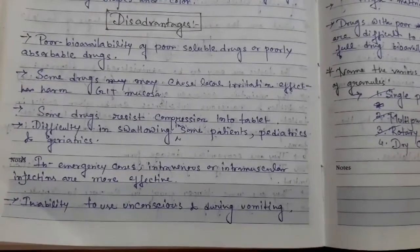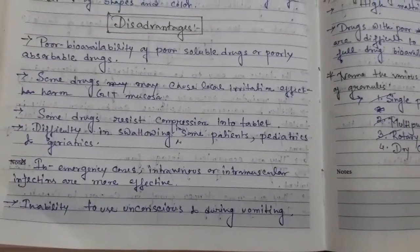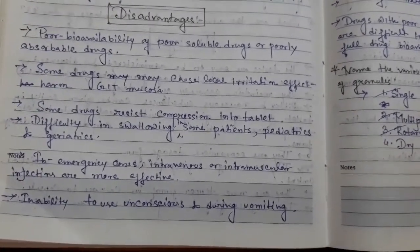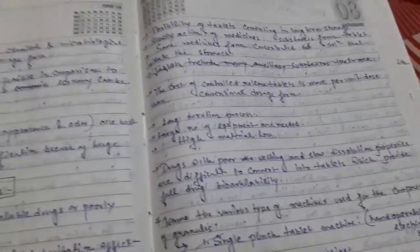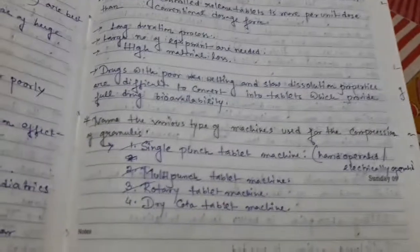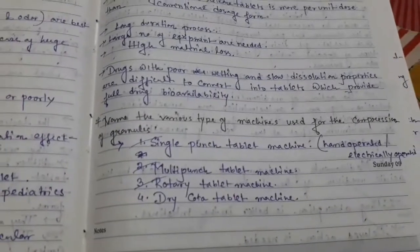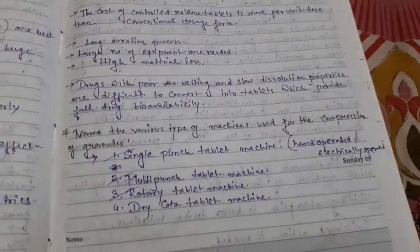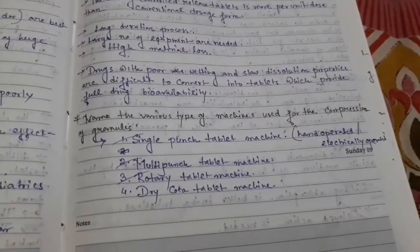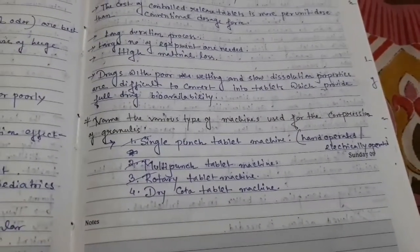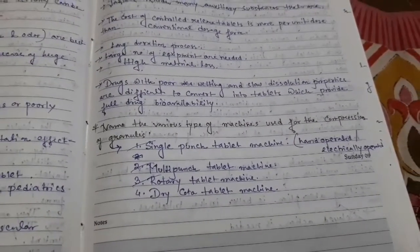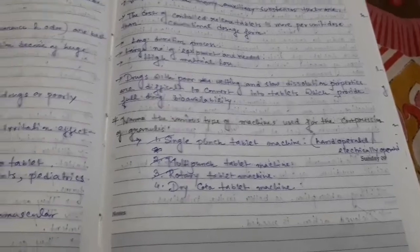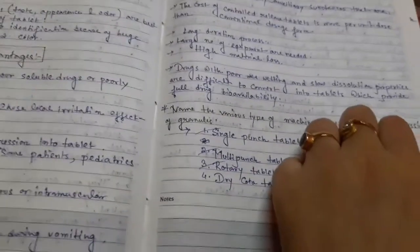Inability to use tablets in unconscious patients and during vomiting. Name the various types of machines used for compression: single punch, multi-punch, rotary tablet machine, and dry coated tablet machine.